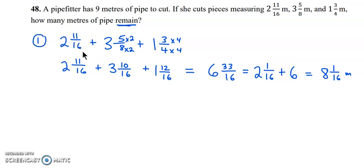From here, we can subtract that from the 9. So our second step is to take 9 meters minus the 8 and the 1/16. We need a fraction over here in order to subtract the 1/16, so we're going to borrow.